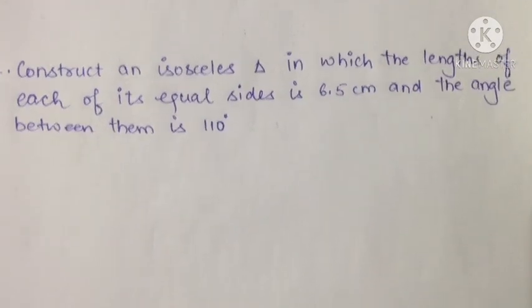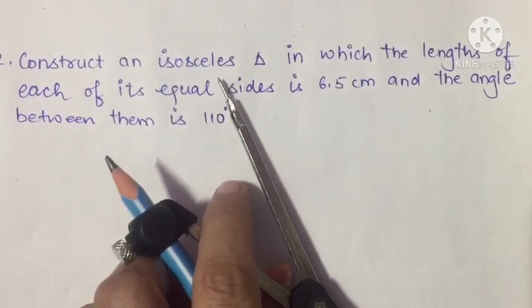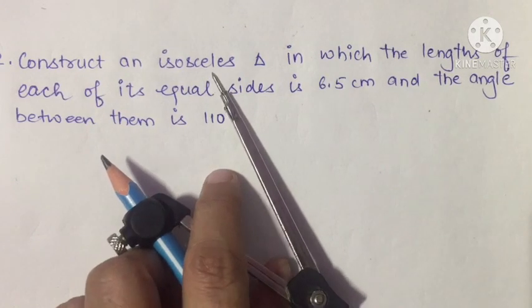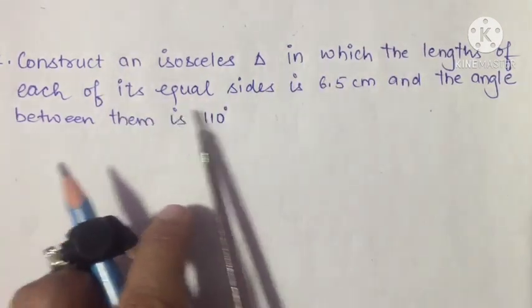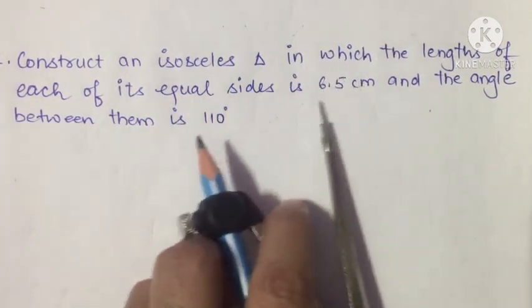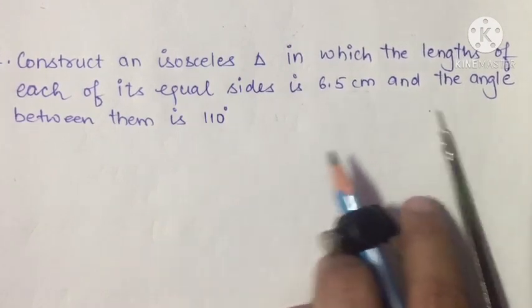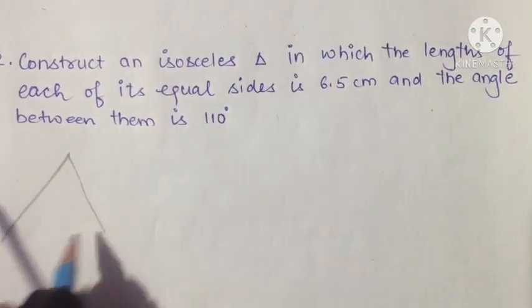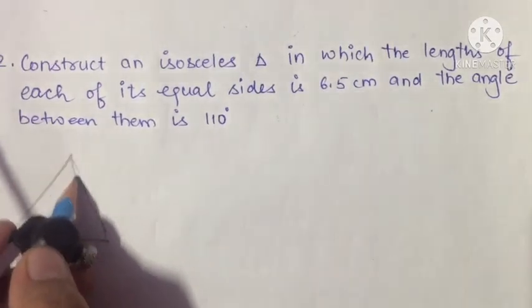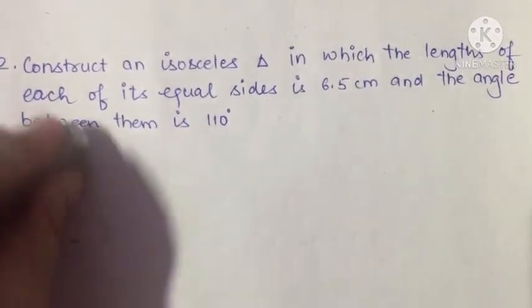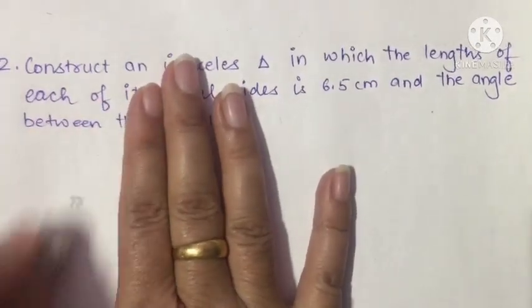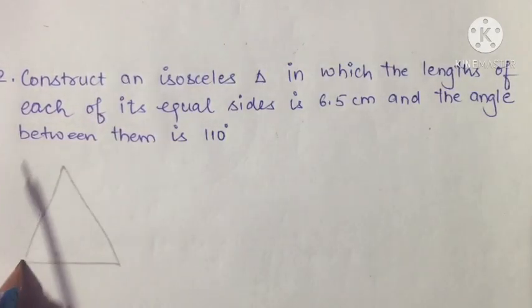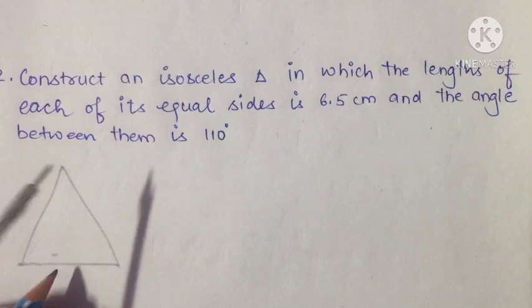Let us see question number two. Construct an isosceles triangle — that is, a triangle having two equal sides and two equal opposite angles — in which the length of each of the equal sides is 6.5 cm and the angle between them is 110 degrees. The rough sketch will show one angle of 110 degrees at the top.